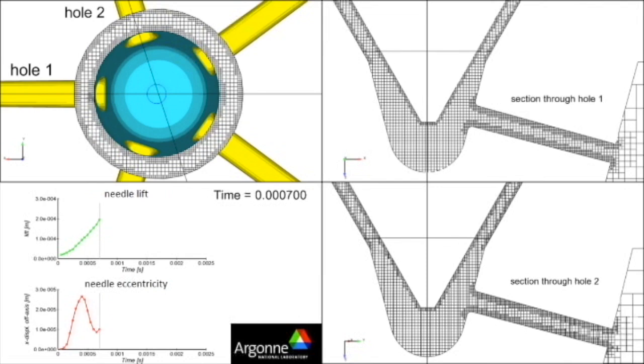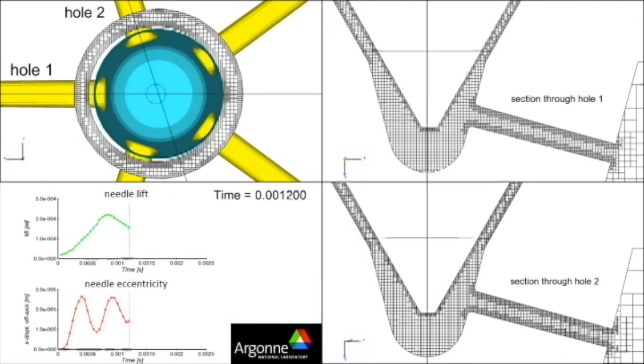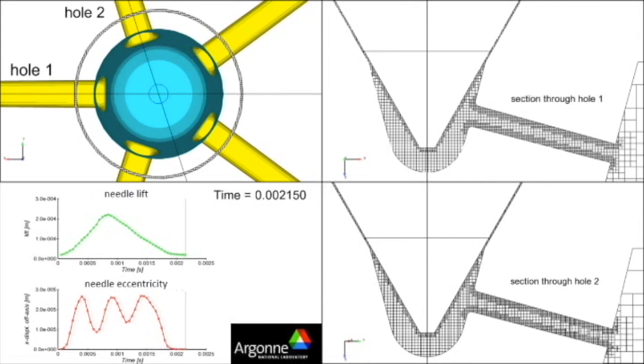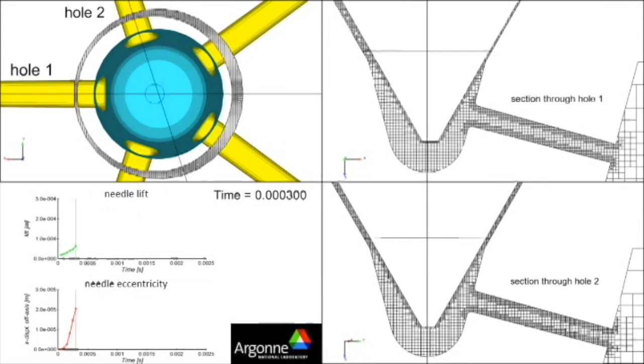This video shows the multidimensional flow inside the fuel injector sack and orifice of a five-hole diesel fuel injector, accounting for injector needle lift and wobbling.